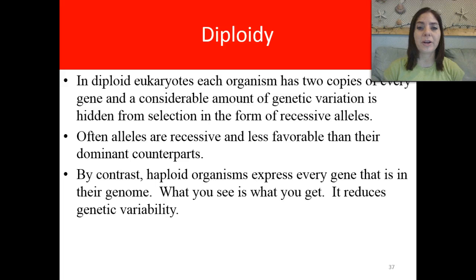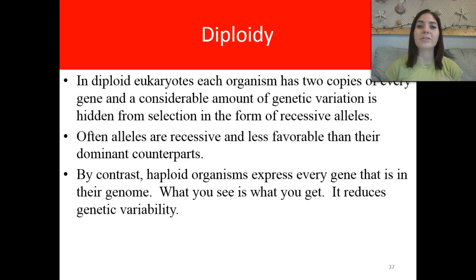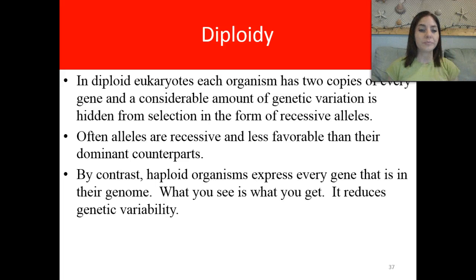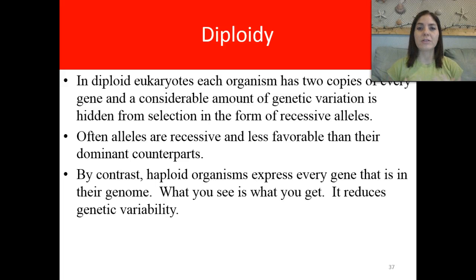Diploidy: in diploid eukaryotes, which we are, we have two sets of chromosomes — two copies of every single gene. Some are dominant, some are recessive. If we have recessive genes, we're not going to see that phenotype. For example, I have brown hair, but I might be big B, little B, and carry a trait for blonde hair — only the brown one shows through. In contrast, a haploid organism is going to express every single gene they have. If it's a big B, they're brown; if it's a little B, they're blonde. Basically, what you see is what you get, and it also reduces genetic variability.